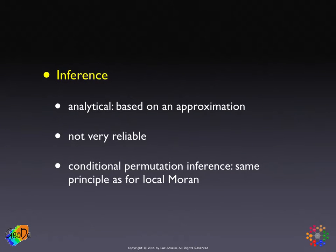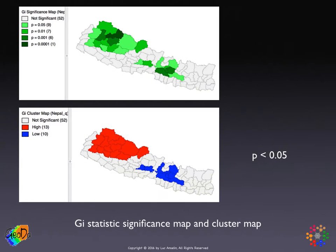For inference on this statistic, we can derive the moments under the null hypothesis of randomization, just as we did for Moran's I. But as with the local Moran, this is not very reliable. A much more robust inference can be based on the same conditional permutation approach that we saw for the local Moran. The output is, again just like for the local Moran, a significance map and a cluster map.